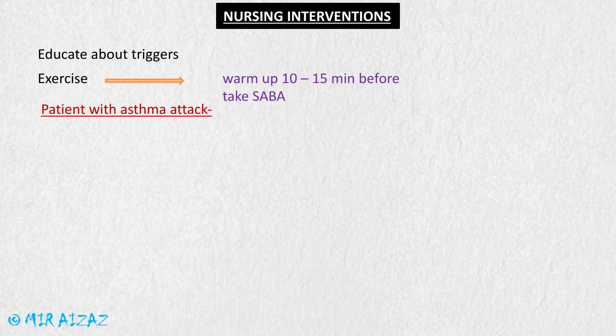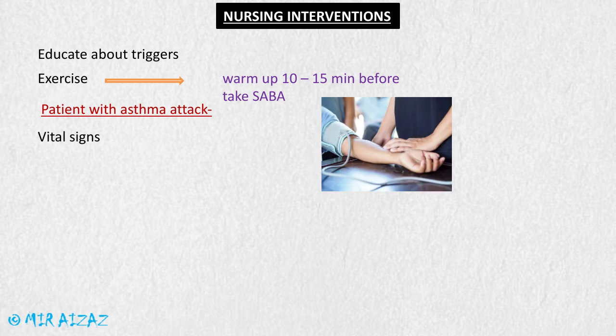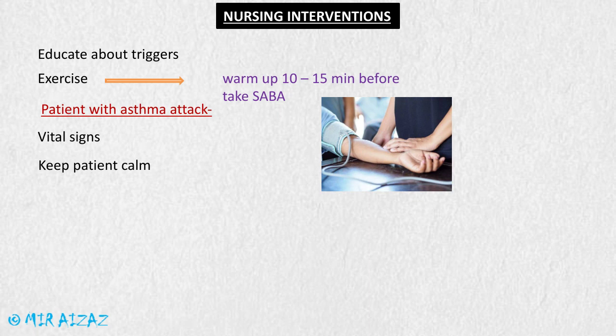When a patient presents with an asthma attack, nursing interventions include taking vital signs to establish a baseline, which can later be compared after giving medications. The nurse should help the patient keep calm and should not appear anxious or worried in front of the patient, as this can increase the patient's anxiety and aggravate the asthma attack.